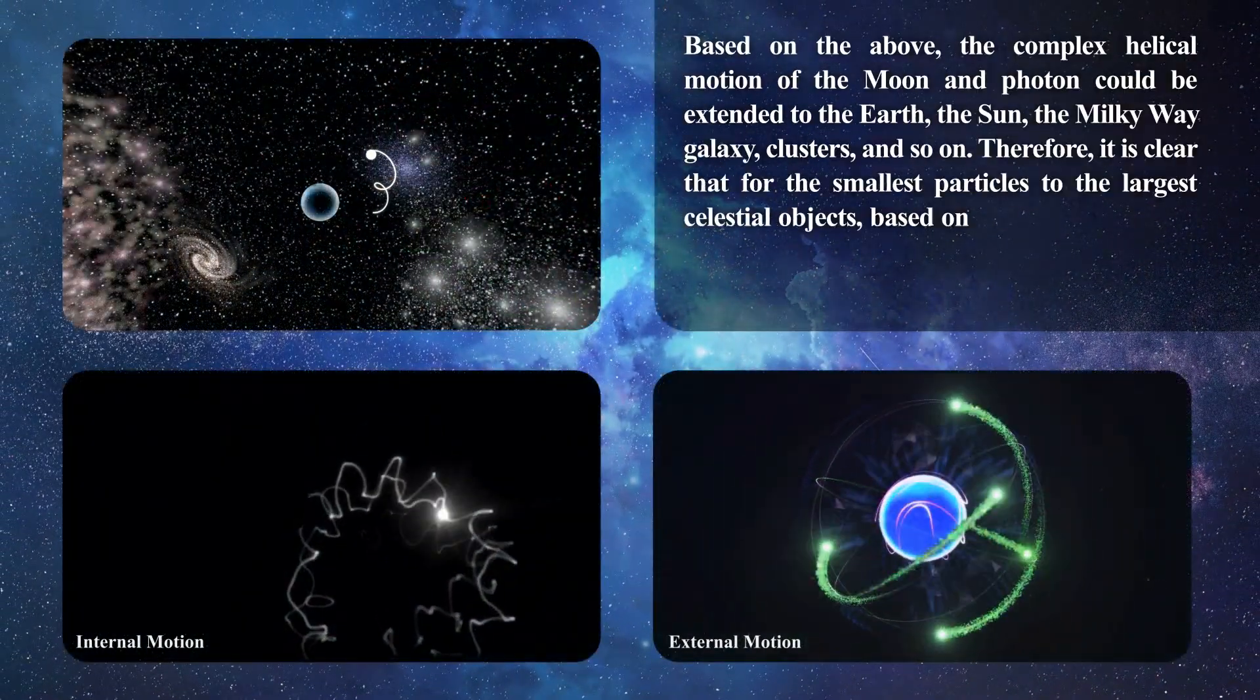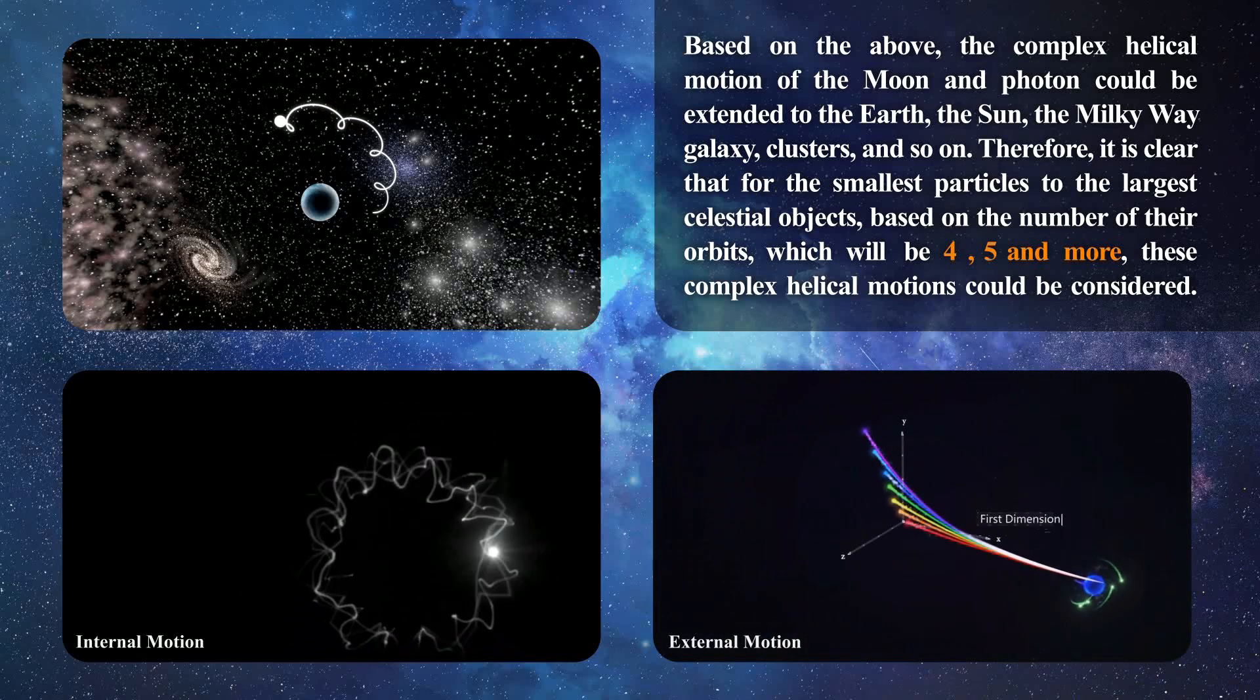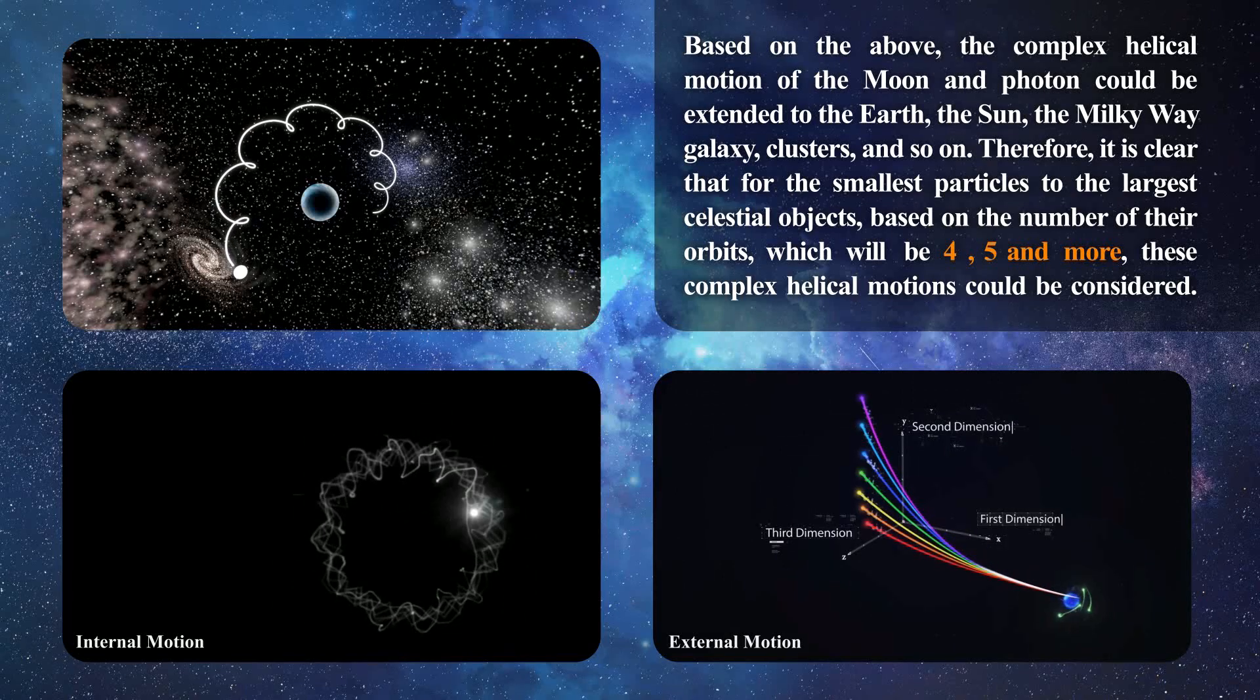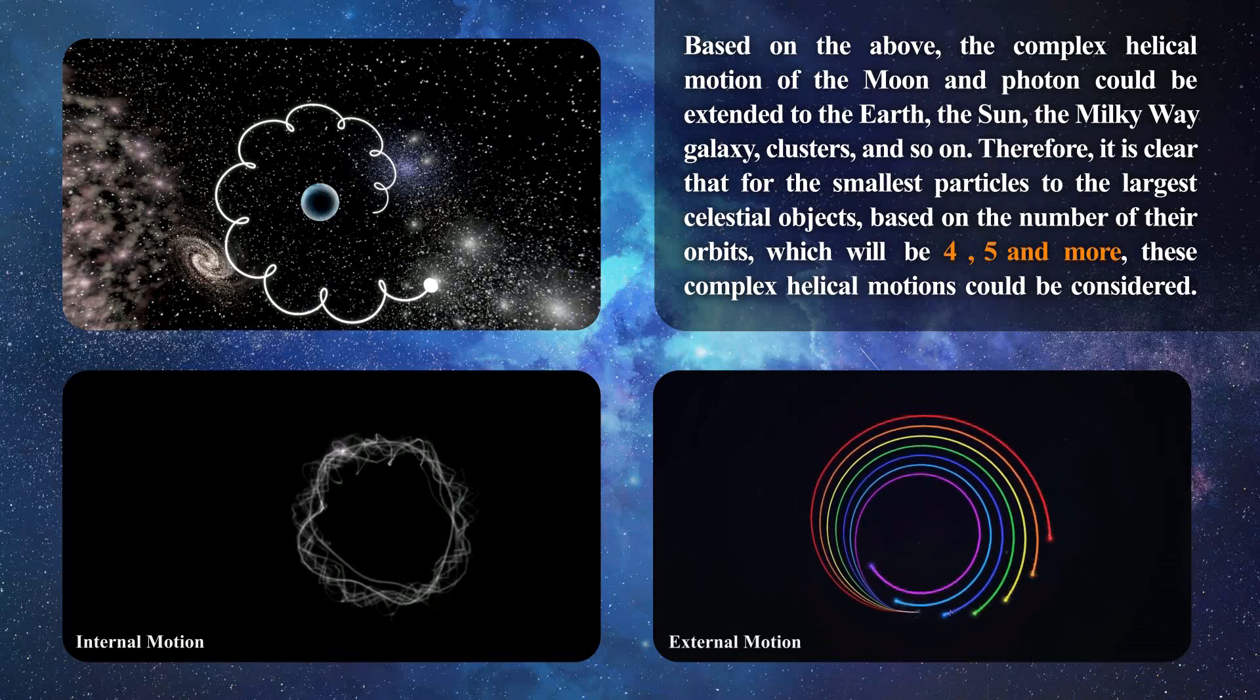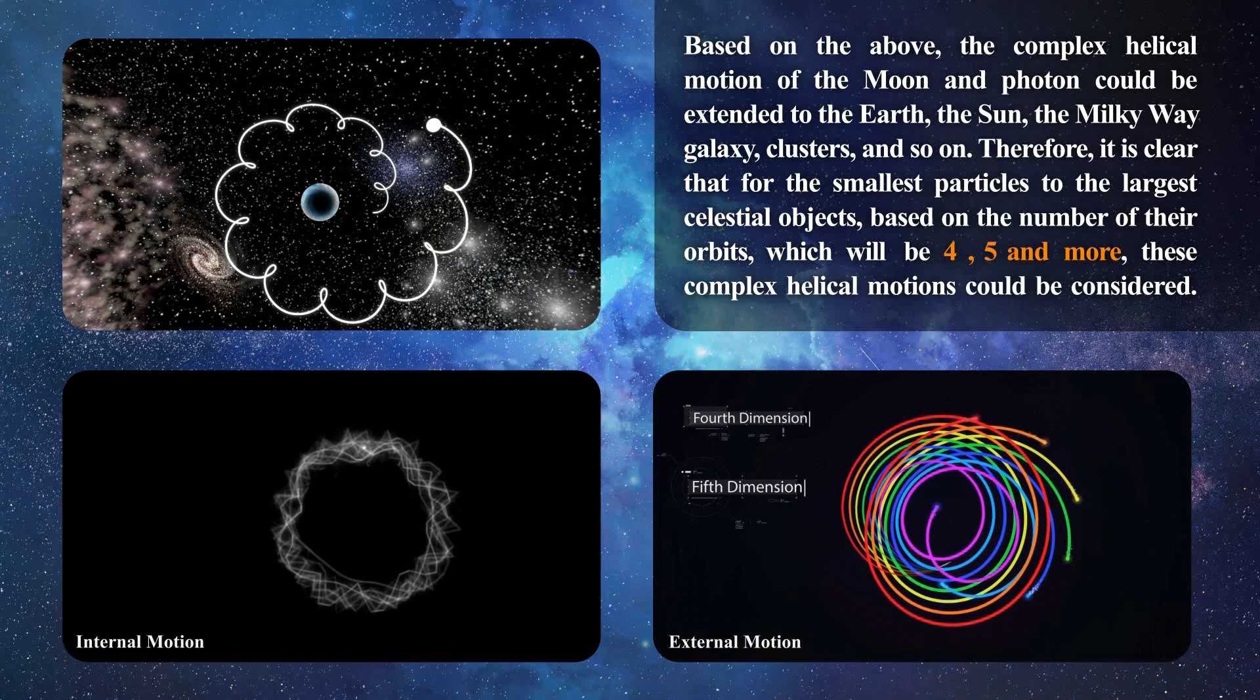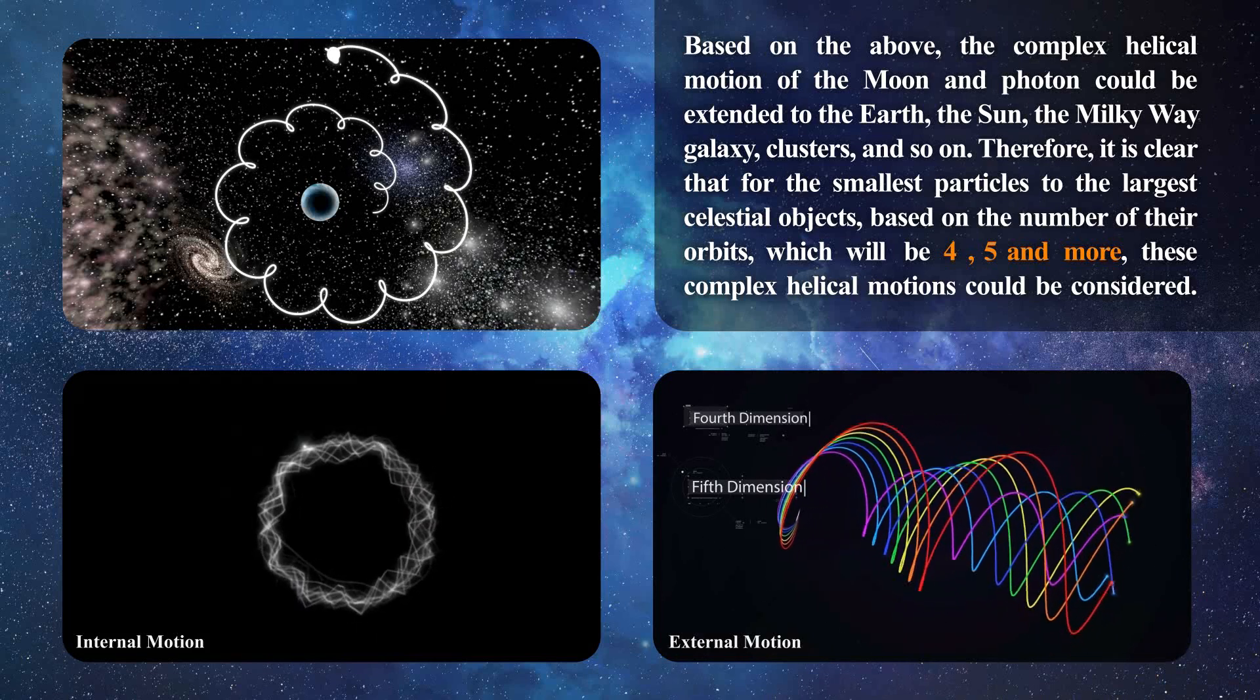Based on the above, the complex helical motion of the Moon and photon could be extended to the Earth, the Sun, the Milky Way galaxy, clusters, and so on. Therefore, it is clear that for the smallest particles to the largest celestial objects, based on the number of their orbits which will be four, five, and more, these complex helical motions could be considered.